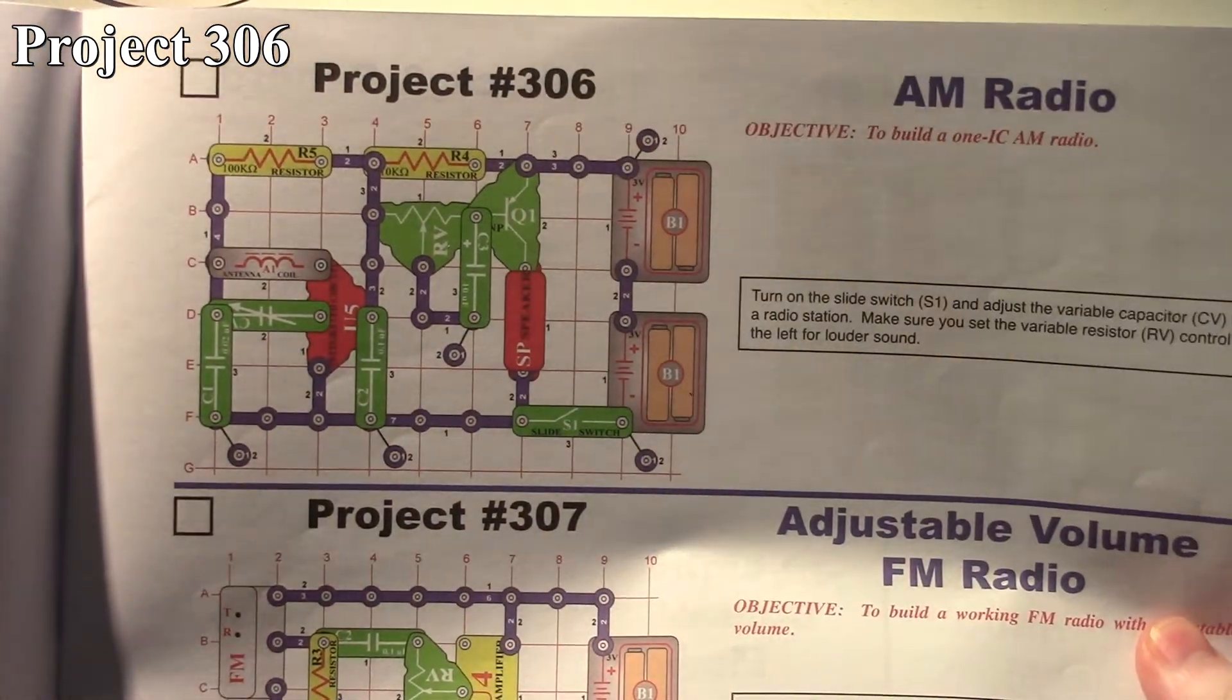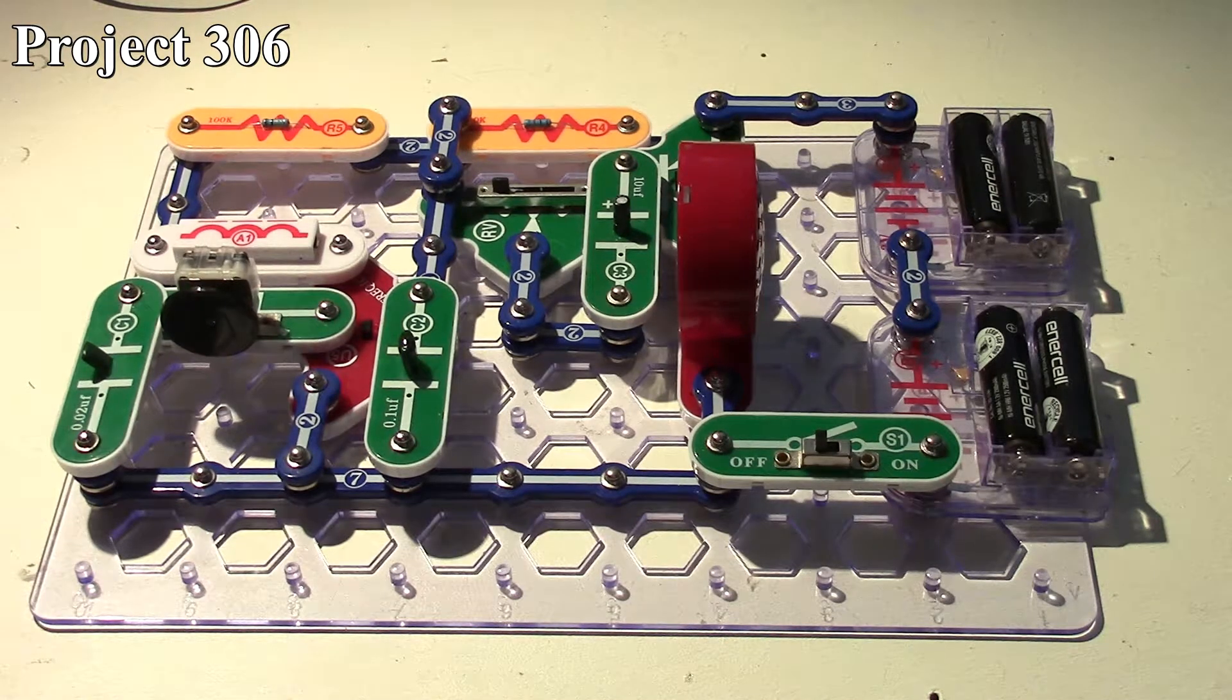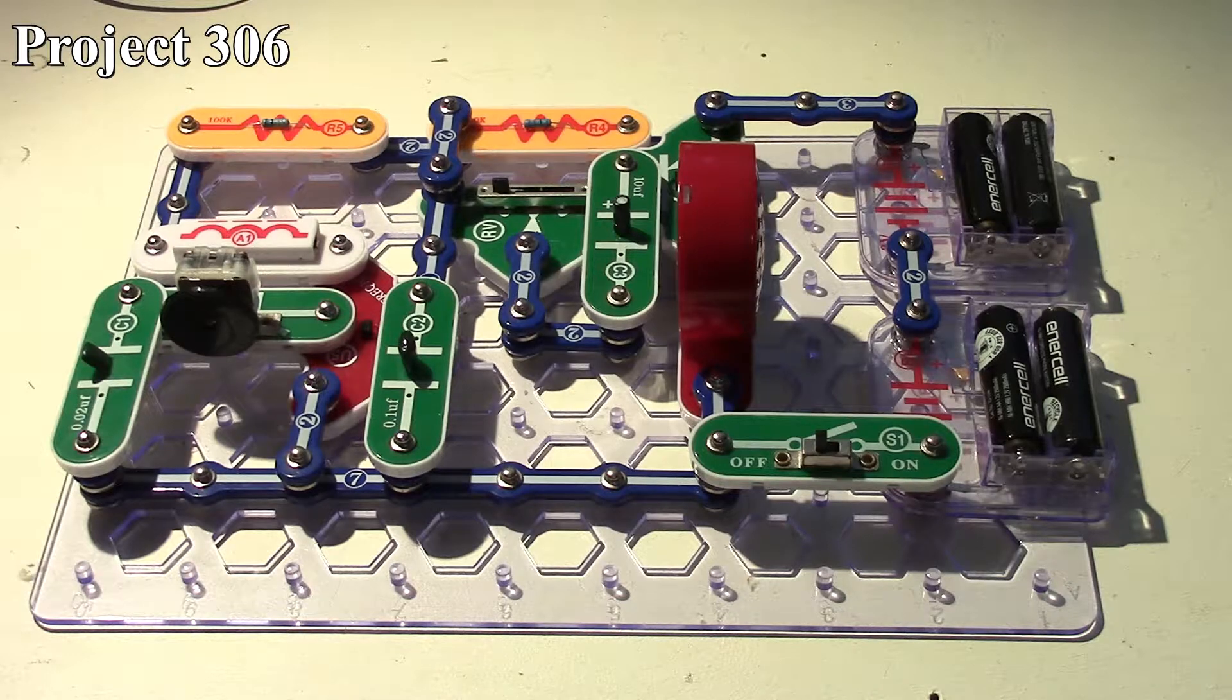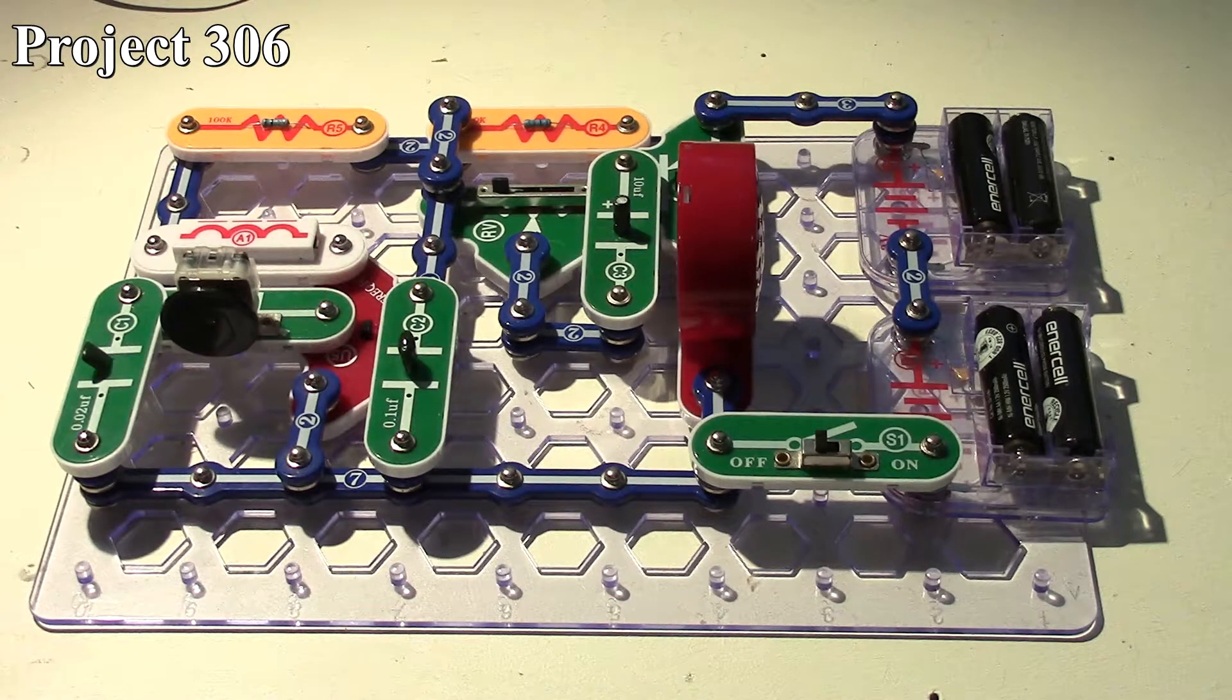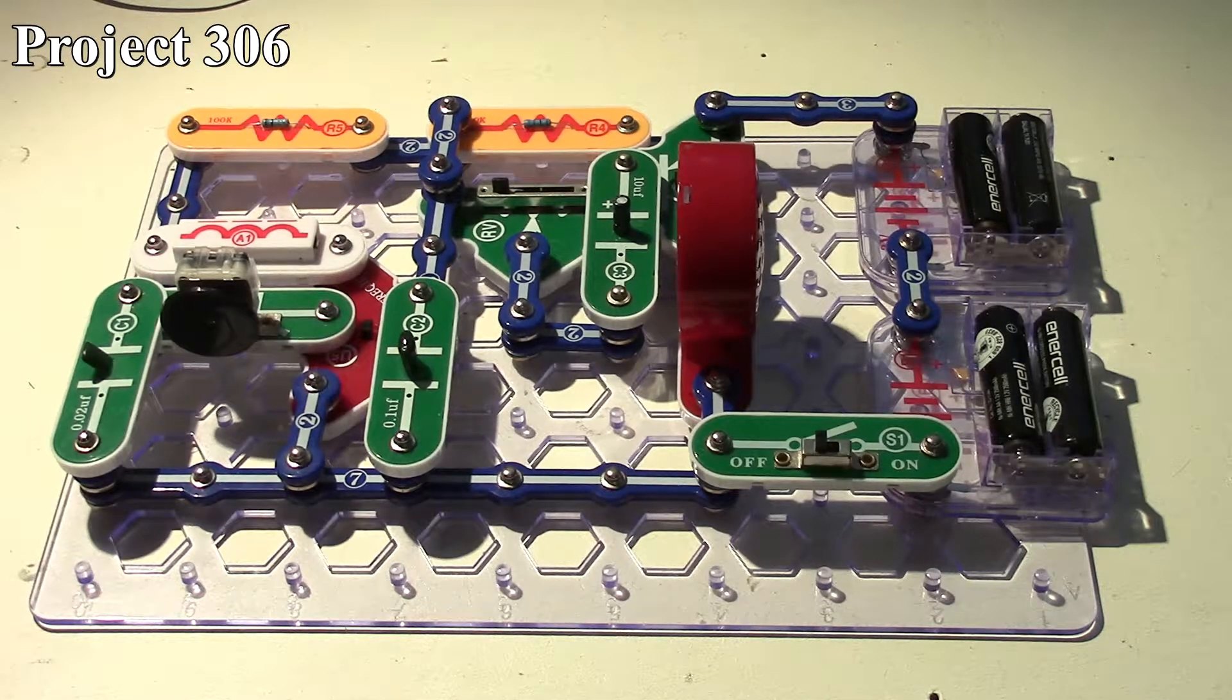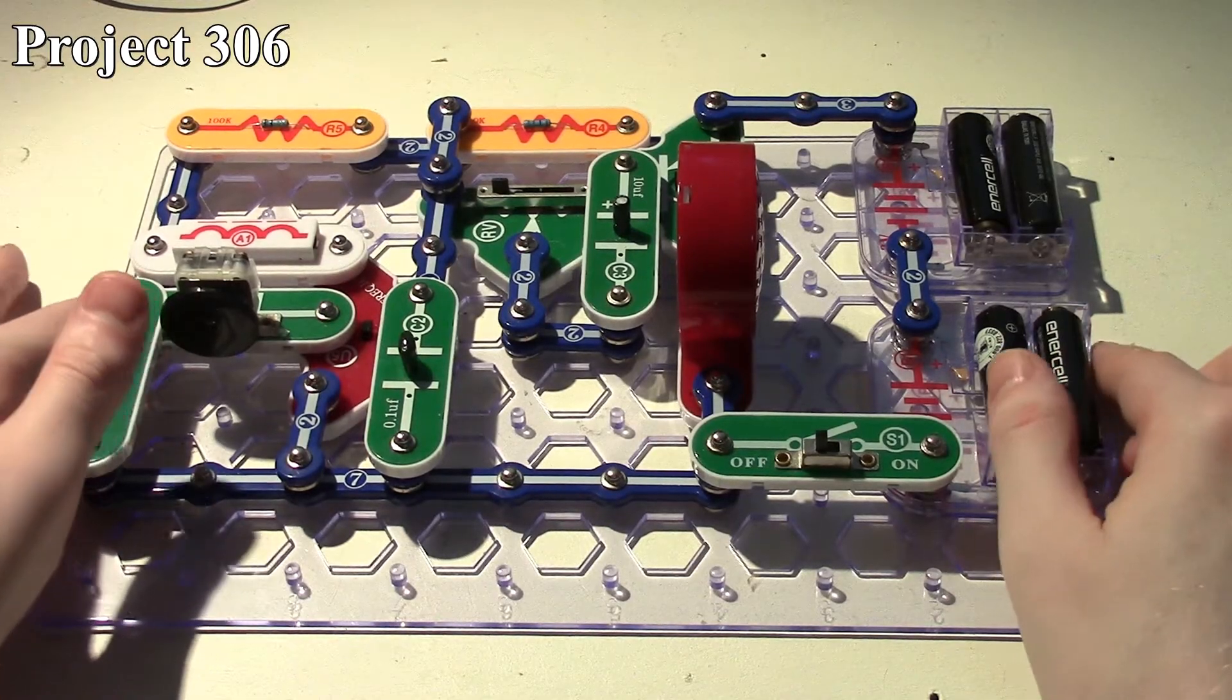Starting with the AM radio, there it is in our book and on the board. I don't quite understand why Snap Circuits put that AM radio project as the first thing in that book because that's something that could be done back in the SC 300 set.